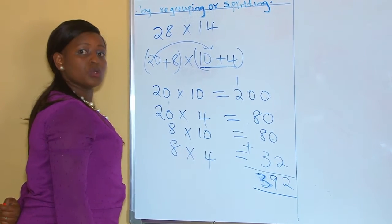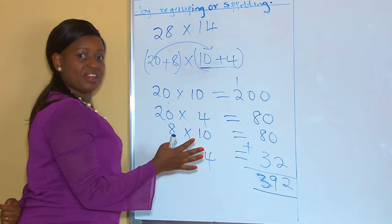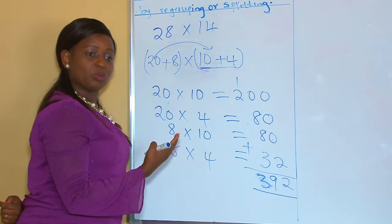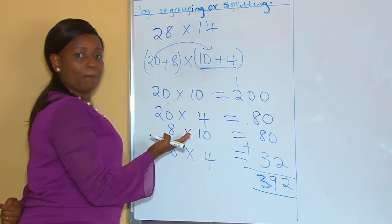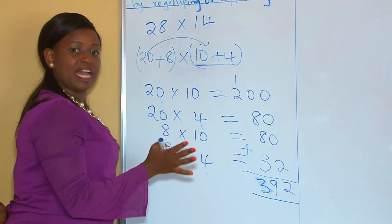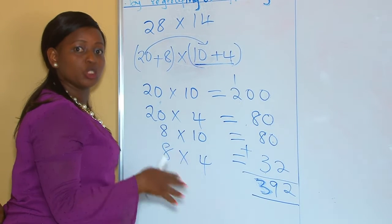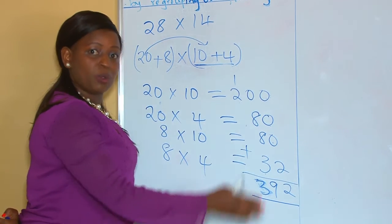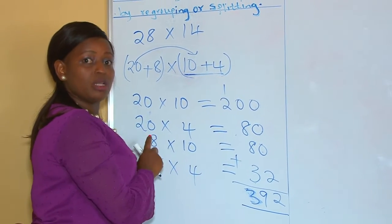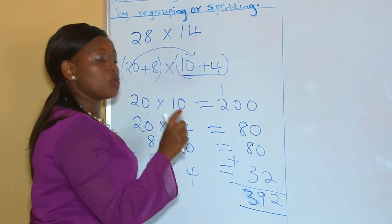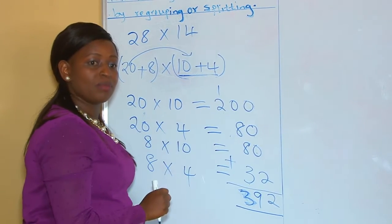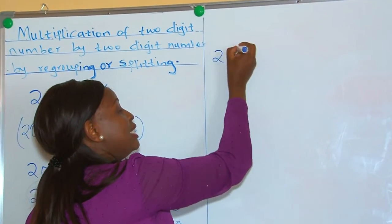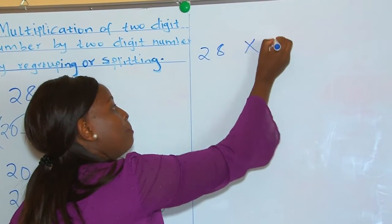For those who are finding the arrangement difficult, I have an option for you. The option uses the same regrouping, but the difference is just the arrangement — using a table to simplify our multiplication. We use the same question, that is 28 multiplied by 14, but now you will tabulate it using a table.